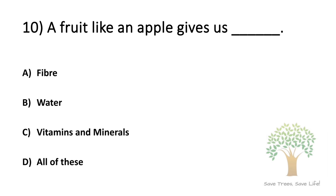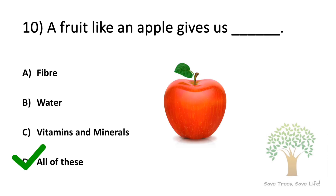Question number 10. A fruit like an apple gives us — Option A: fiber. Option B: water. Option C: vitamins and minerals. Option D: all of these. The answer is Option D, all of these.